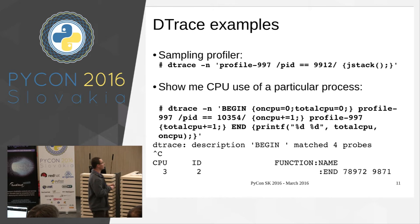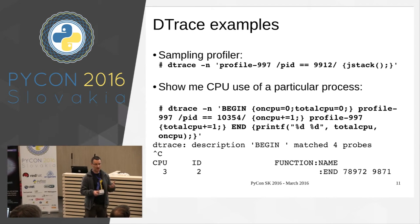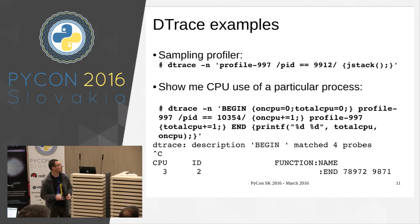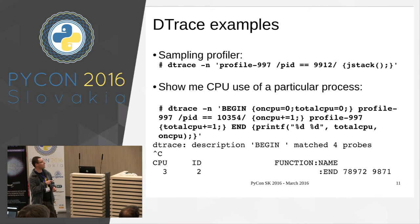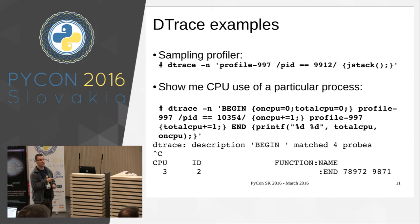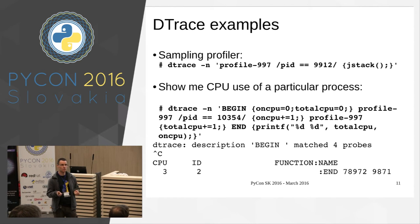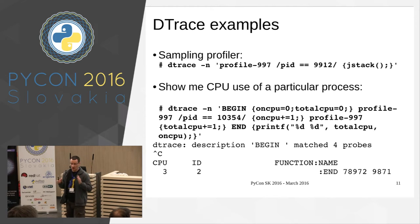This is an example of a dynamic probe — a probe that doesn't exist until you create it. This is running 1,000 times per second. I'm asking DTrace to create a probe running that many times per second. When it runs, it checks — this is conditional execution — if the current process is this one, and if so it shows me the stack of the process. I can collect this to create a flame graph of a profiler, to see what routines are taking most of the time — without touching the running process.